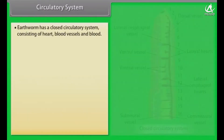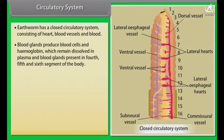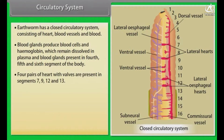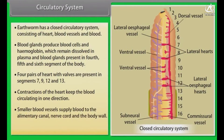Circulatory system. Earthworm has a closed circulatory system consisting of heart, blood vessels and blood. Blood glands produce blood cells and haemoglobin, which remain dissolved in plasma. Blood glands are present in the fourth, fifth and sixth segments. Four pairs of hearts with valves are present in segments seven, nine, twelve and thirteen. Contractions of the heart keep the blood circulating in one direction. Smaller blood vessels supply blood to the alimentary canal, nerve cord and the body wall. Blood cells are phagocytic in nature.